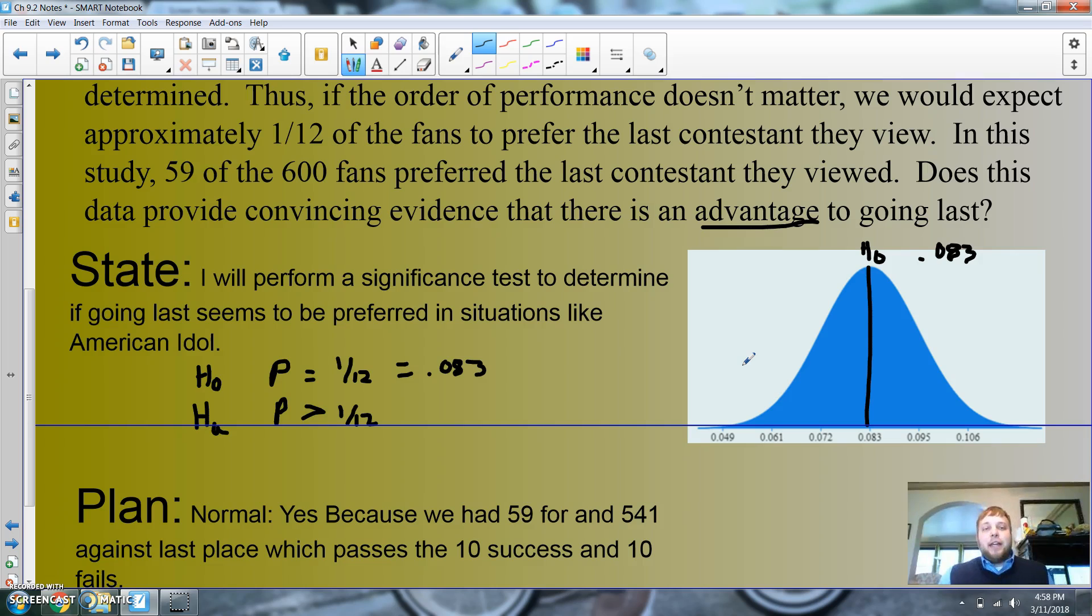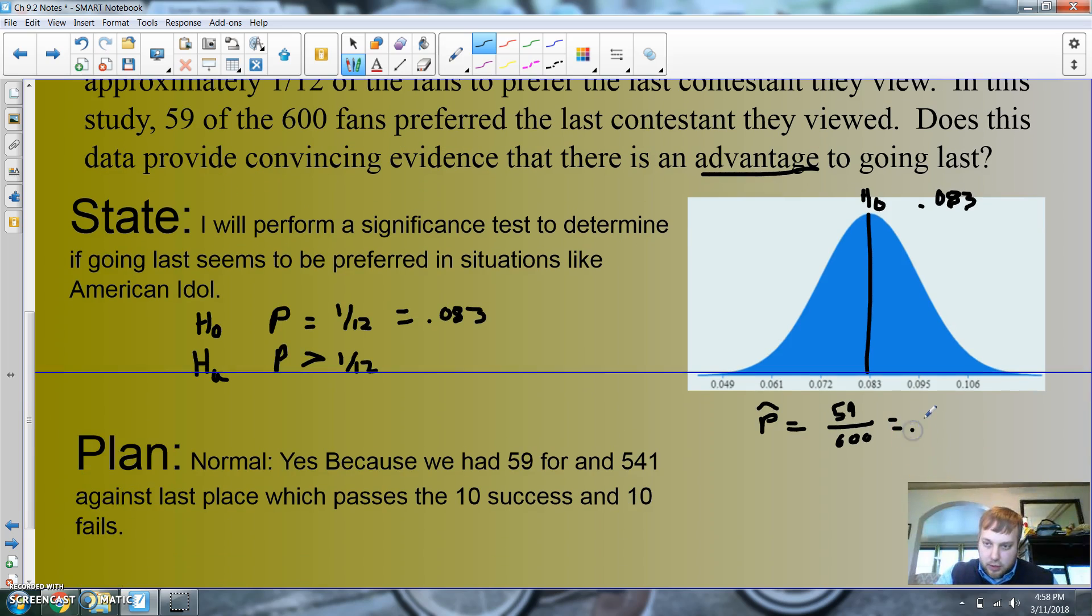Now I got 59 out of 600, so 59 divided by 600. So I got a value, my p-hat is 59 out of 600, which is 0.0983. Now I know you're saying that's really close, 0.0983 is really close. But if this is 0.095, 0.083 is gonna be somewhere in this area right here. Is that far away enough? That's my p-hat. It's over one standard deviation away, probably about one and a half.